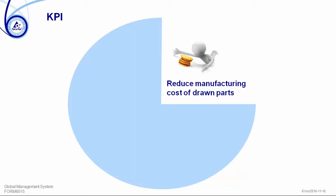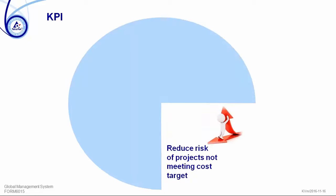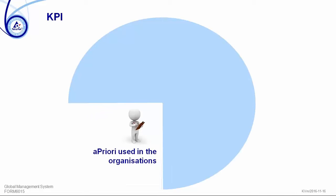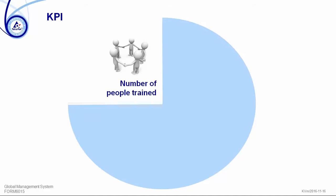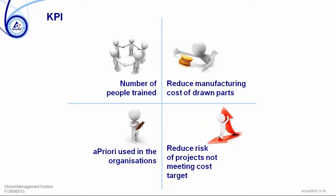We have created some KPIs. Of course we want to reduce manufacturing costs — in this specific KPI case, it's for spare parts. We want to reduce the risk of projects not meeting target costs. We will measure that aPriori is actually being used in the organization, because there's no use having a tool that is not used by people, and we will measure the number of people trained. It's mostly focusing on actually using the tool and building the knowledge — building awareness of cost drivers. Because if you are aware of what drives cost from a very early stage of design, we will not end up with too high a cost at the end.